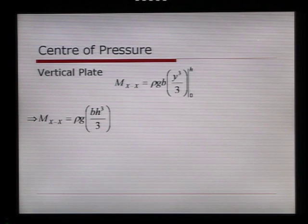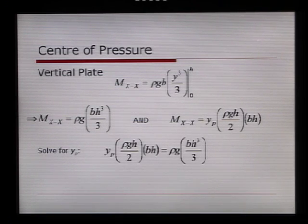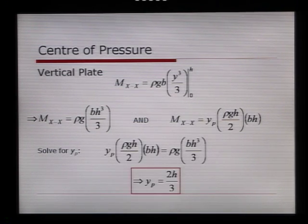In the last slide, we also showed that the moments equal yp times rho g h over 2 times b times h. We can set these two equal to each other and solve for yp, the point of action of the hydrostatic force. By cancelling across, it simplifies to find that yp equals 2 h over 3, where the hydrostatic force acts two-thirds the way down along the hydrostatic wall.